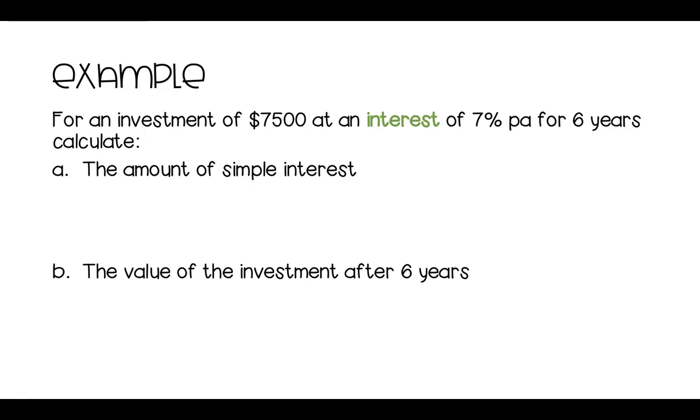Let's do an example question when we look at interest. So for an investment of 7,500 at an interest rate of 7% per annum for six years, calculate the amount of simple interest. So interest equals principal times rate times time. So principal equals 7,500, that's our principal, the amount we put in, the investment.